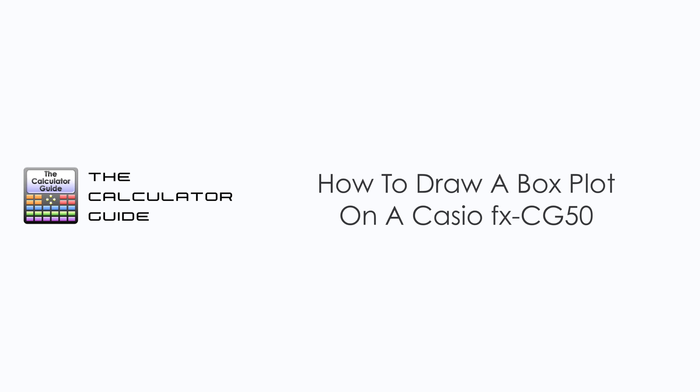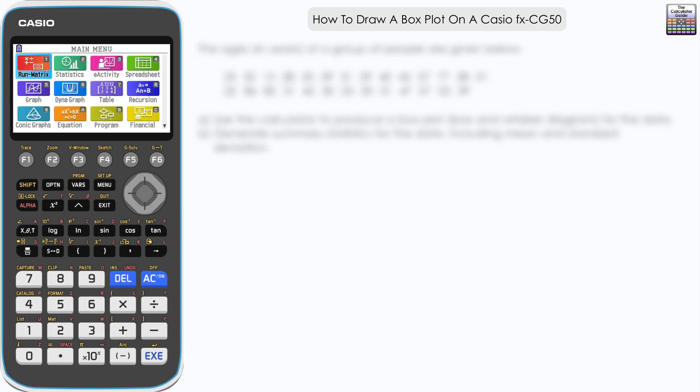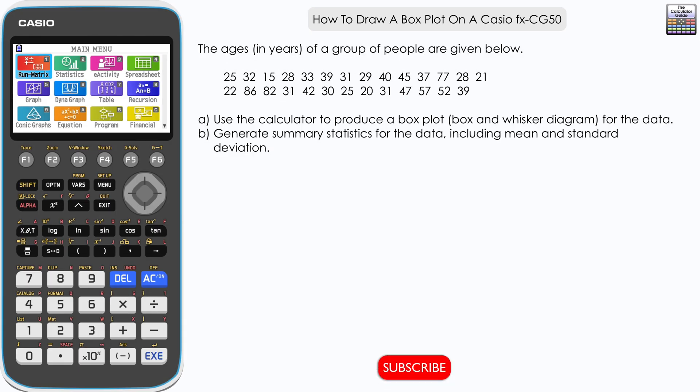Hello and welcome to the calculator guide video on how to draw a box plot on a Casio FX-CG50. The ages in years of a group of people are given below, and we've got to use the calculator to produce a box plot, sometimes called a box and whisker diagram, for the data. Also, we need to generate summary statistics for the data including mean and standard deviation.